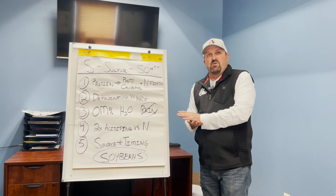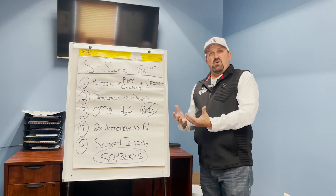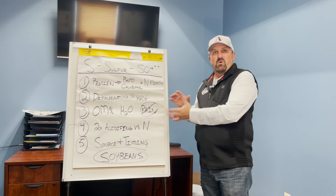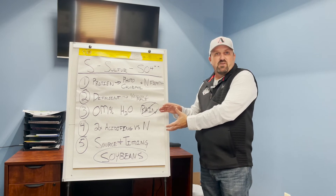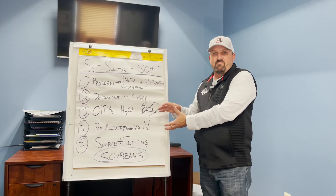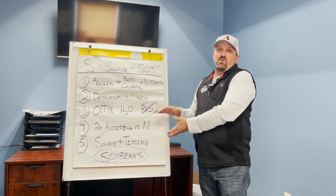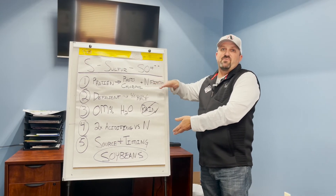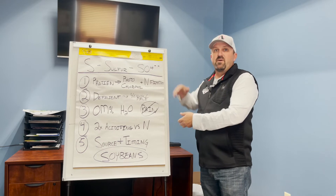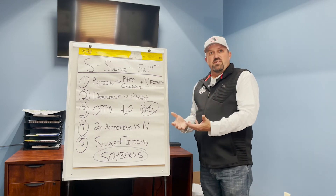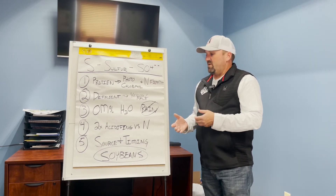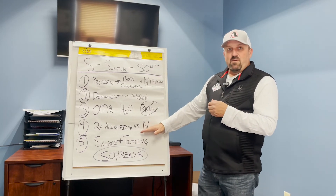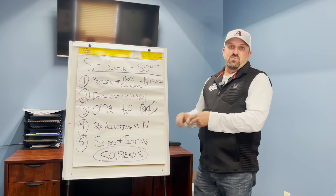As we push into higher yield plateaus, sulfur becomes more important. Where the soil may have provided enough sulfur for 200–220 bushel corn, pushing up to 250–300 bushels may require additional sulfur applications.